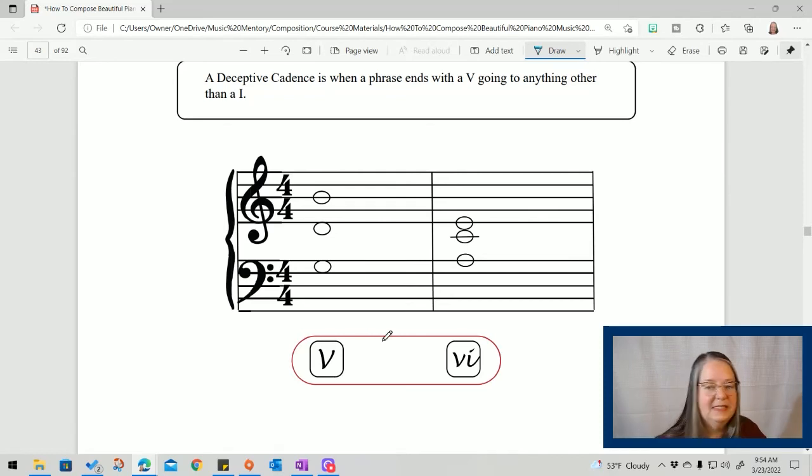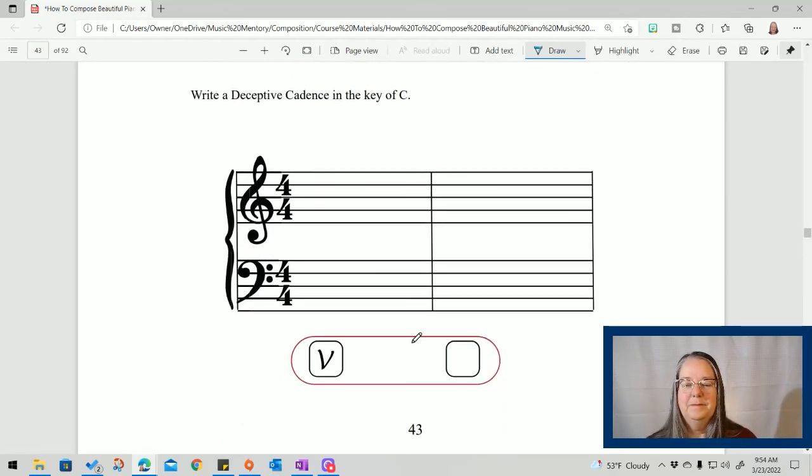So a deceptive cadence starts with a five and goes to anything else. Here's what that five to six sounds like. You'd think, right, you're expecting that. You don't get that. Okay, now write a deceptive cadence. We'll go five to what should we go to? How about three?